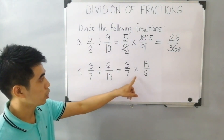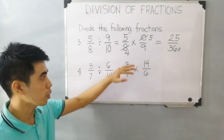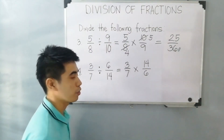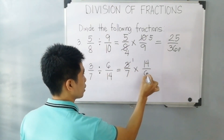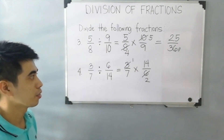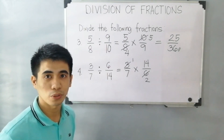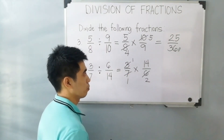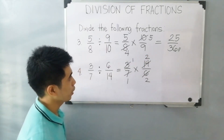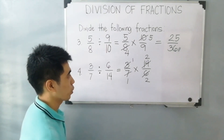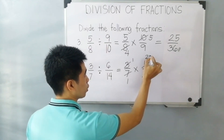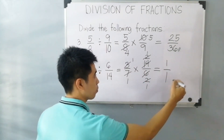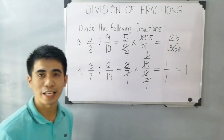Now let's analyze if the numerators can simplify to the denominators. We have 3 and 6 — divisible by 3, so 3 divided by 3 is 1, and 6 divided by 3 is 2. Next, 14 and 7 are divisible by 7, so 7 divided by 7 is 1, and 14 divided by 7 is 2. We also have 2 and 2, so 2 divided by 2 is 1. Therefore, 1 times 1 is 1 and 1 divided by 1 is 1. Our final answer is 1.